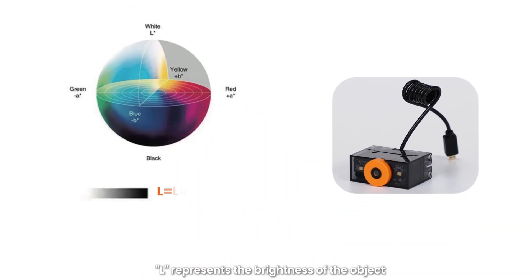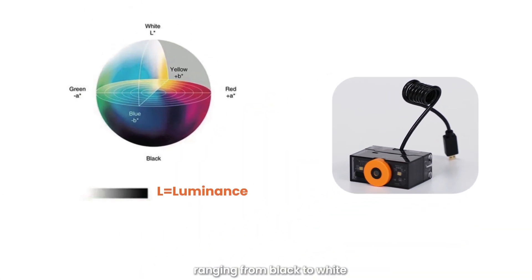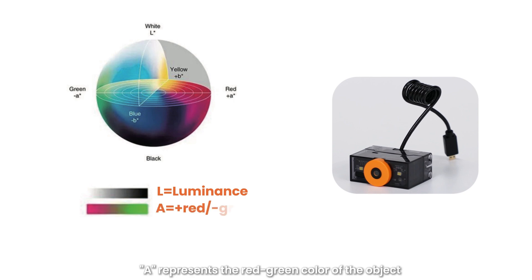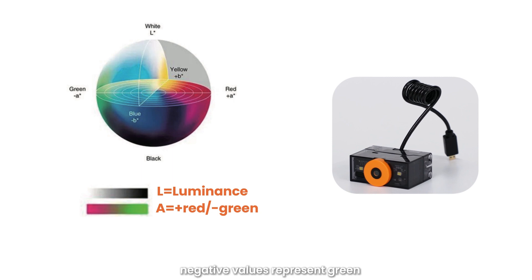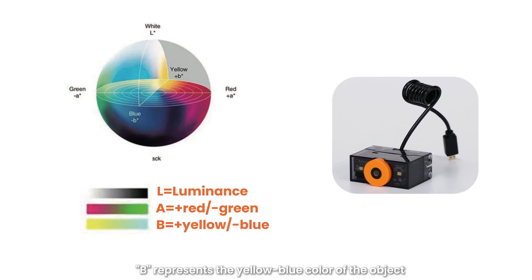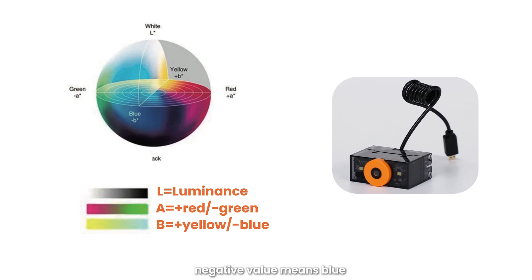L represents the brightness of the object with a value of 0 to 100, ranging from black to white. A represents the red-green color of the object with a value of minus 128 to 127: negative values represent green, positive values represent red. B represents the yellow-blue color of the object with a value of minus 128 to 127: negative value means blue, positive value means yellow.